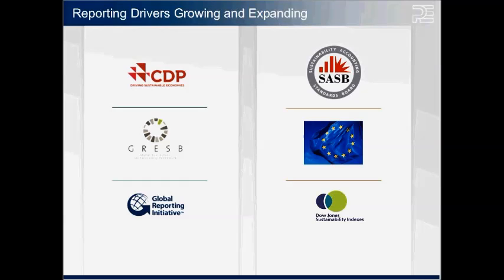SASB is using the US Supreme Court definition of materiality, with a goal to develop sector-specific standards for 80-plus industries by the middle of 2015. They already have five or six standards completed in areas like transportation, healthcare, financials, and non-renewable resources. It's currently voluntary, but their aim is to get the SEC — the Securities and Exchange Commission — to adopt their standards. The SEC already has some sustainability-related reporting requirements, such as reporting on conflict minerals and health and safety, so this is definitely one to watch. While it is a US-based initiative, any company with operations in the US will be touched by this as it moves forward.